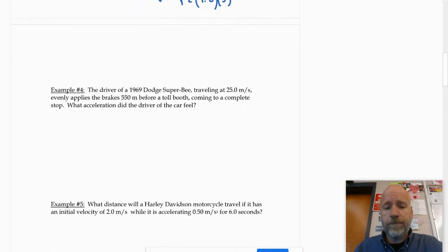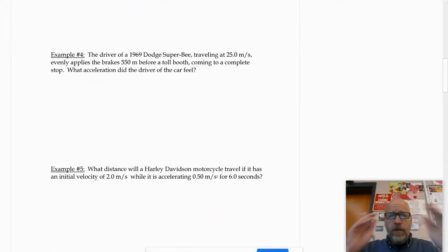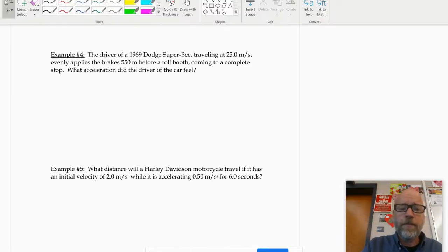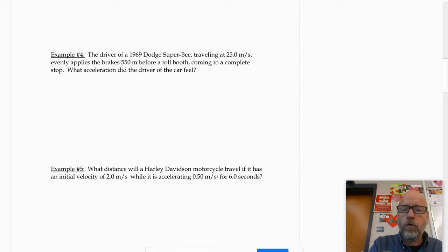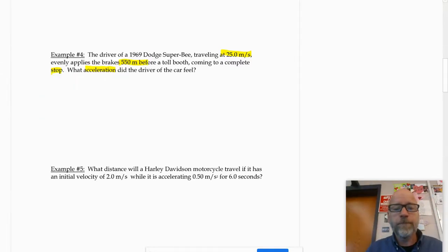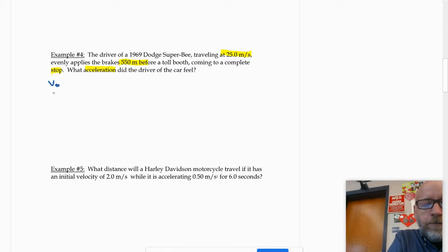Next. The driver of a 1969 Dodge Super B traveling at 25 meters per second evenly applies the brakes for 550 meters before a toll booth. Coming to a complete stop. Yeah, we're not just driving through in the fast lane. We're coming to a stop and paying. What acceleration did the car or the driver experience? Okay. Let's make a chart. So I've got V naught, V, D, A, T. The initial velocity is 25 meters per second. Final velocity is zero. Displacement is 550 meters. And the acceleration is what we're looking for.